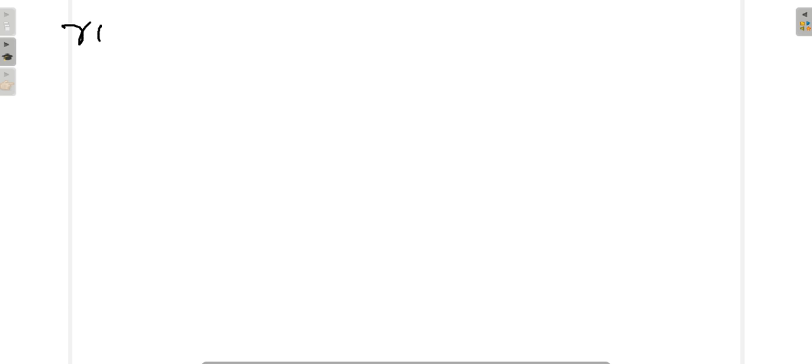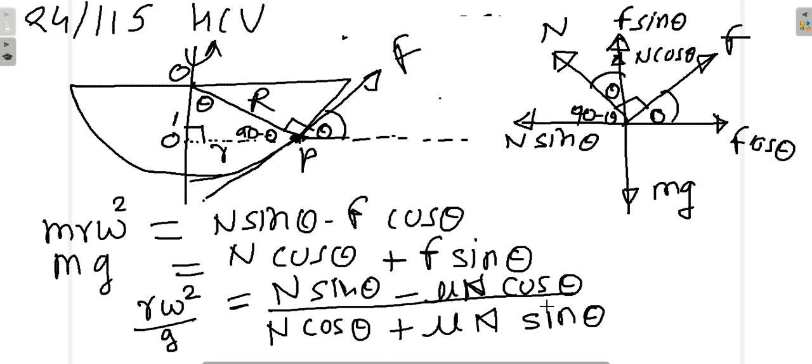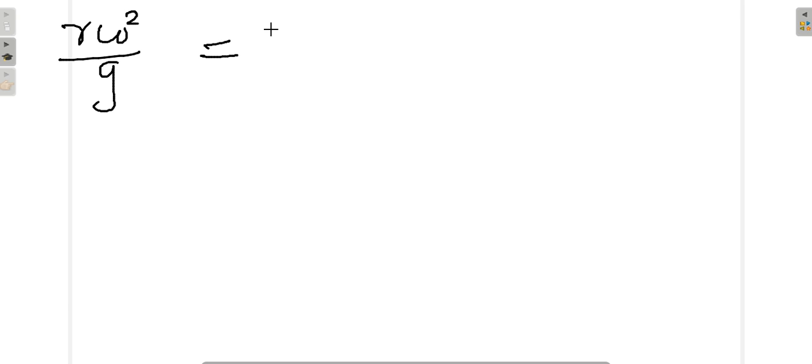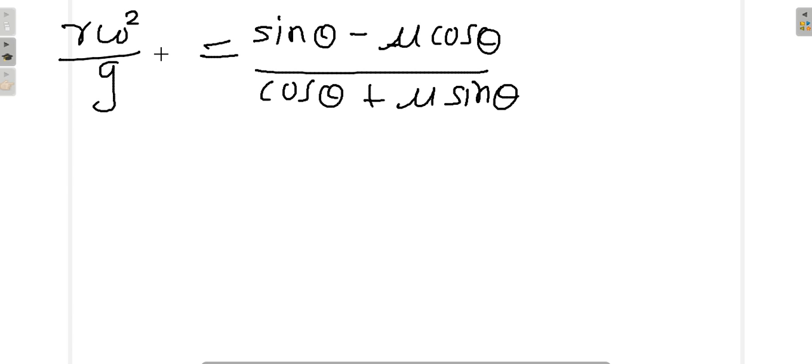I have r omega square upon g equal to sin theta minus mu cos theta over cos theta plus mu sin theta. That gives me omega square as g upon r times sin theta minus mu cos theta over cos theta plus mu sin theta.